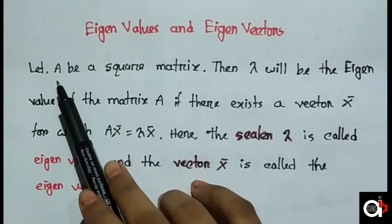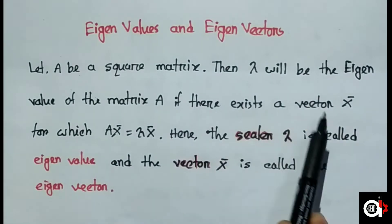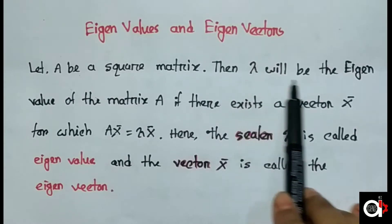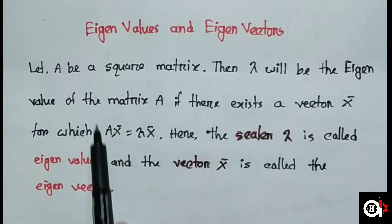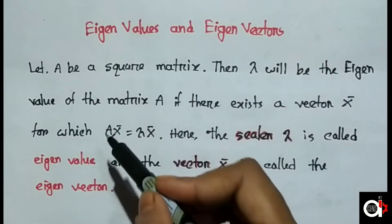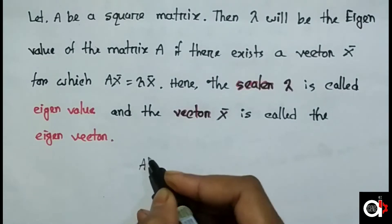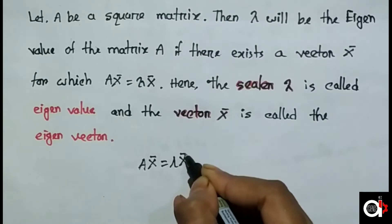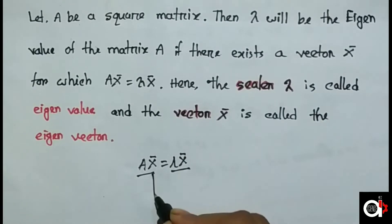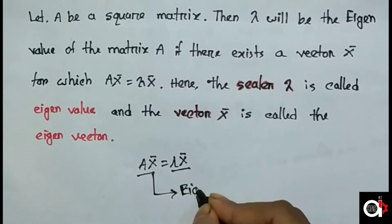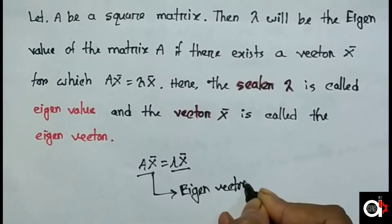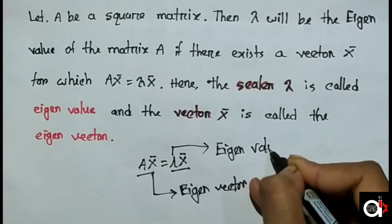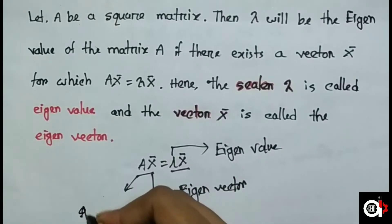That means, if A is a square matrix and we multiply vector x by matrix A, and if that equals multiplying the scalar lambda by the vector x, then the condition Ax = λx is satisfied. Here x is the eigenvector and lambda is the eigenvalue, and A is a square matrix.